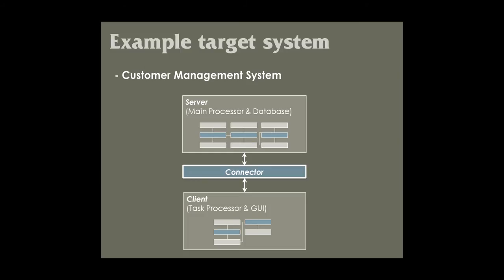In this demonstration, we'll use the customer management system as a simple example input. In a larger view, there are two parts: the server part for the main processor and database, and the client part for task processor and GUI. Each part contains several software components and connectors.